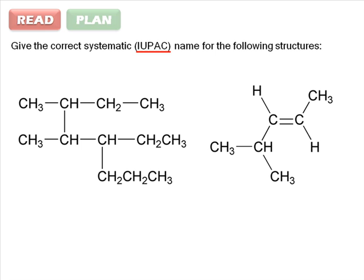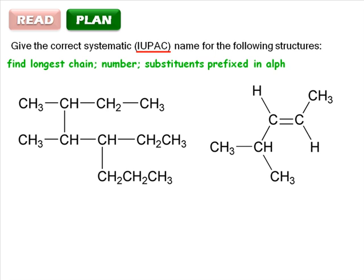In planning your approach, outline the main steps. Find the longest chain of carbon atoms and name it accordingly. Number the chain so that the first substituent has the lowest numerical value, and add the substituents as prefixes in alphabetical order.